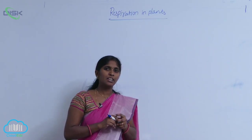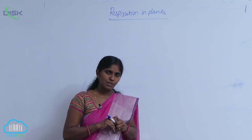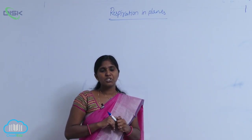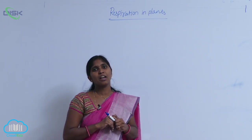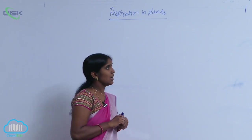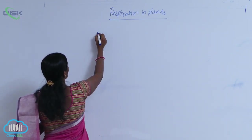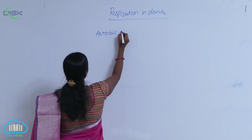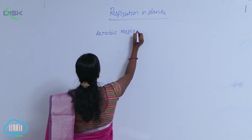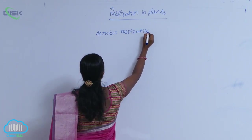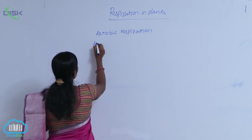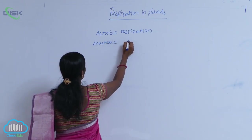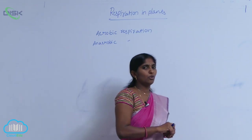There are two types of respiration. One is aerobic respiration, and another one is anaerobic respiration. Respiration going on in the presence of oxygen is called aerobic respiration. In anaerobic conditions, it is a partial oxidation of food material.